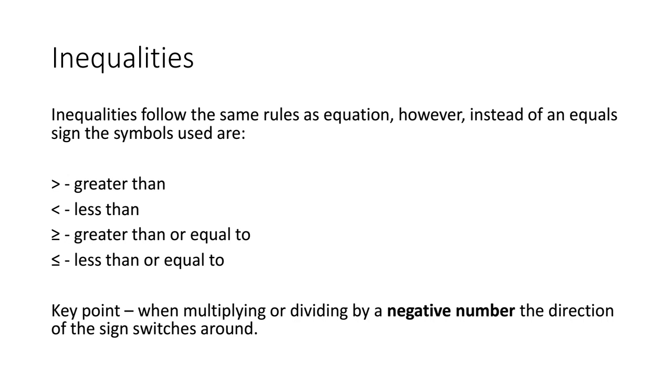However, instead of an equal sign, we change the symbols. There's four different symbols that we could use and they are shown here. First one that we've got is the greater than sign. Next one is the less than sign. Then we've got greater than or equal to, and finally, less than or equal to.